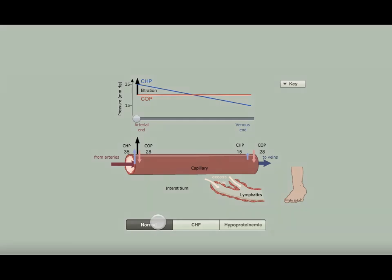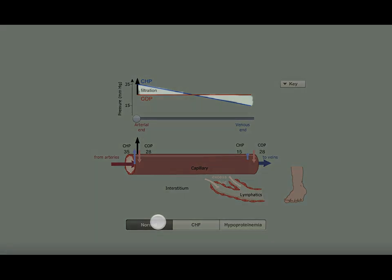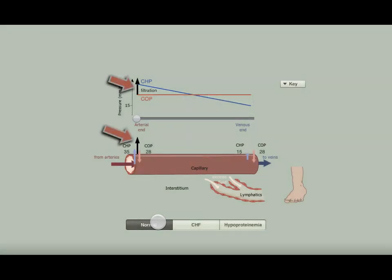You can see this as the difference between the CHP and COP lines on the graph. The black arrow also shows this difference for any point along the capillary.